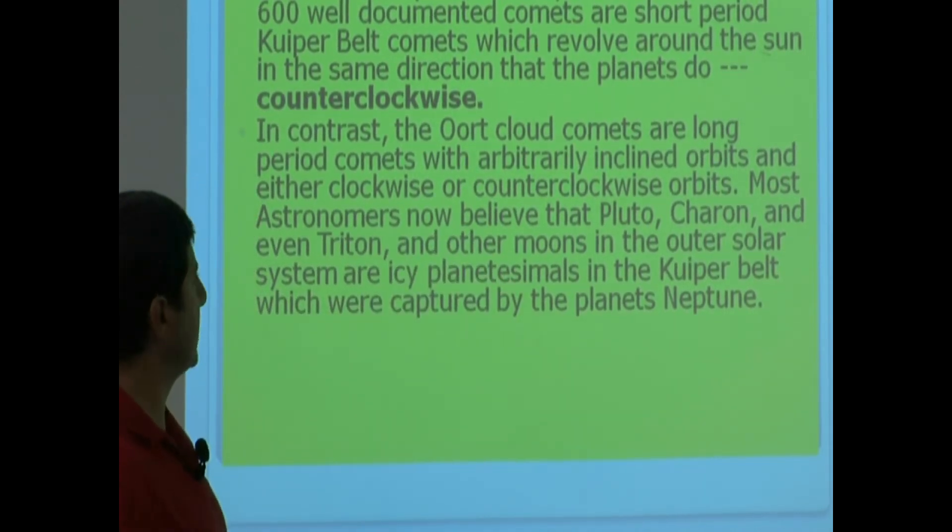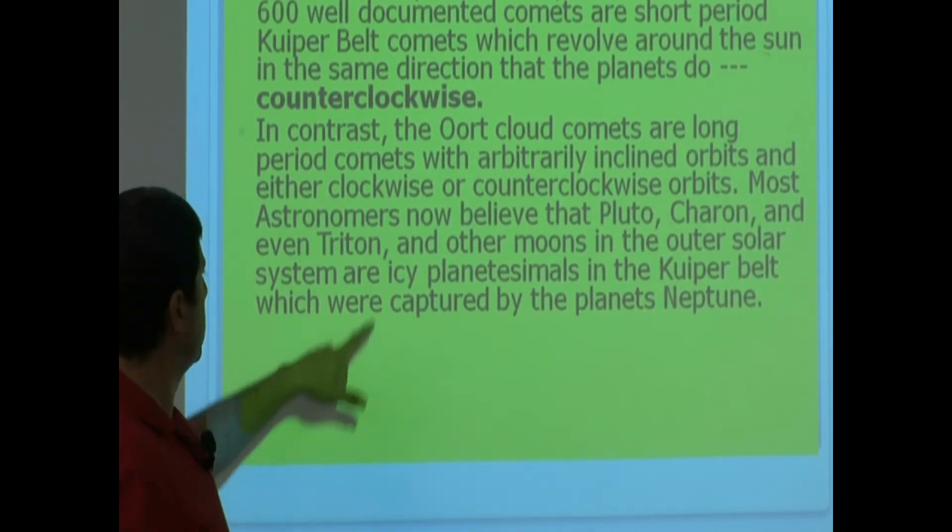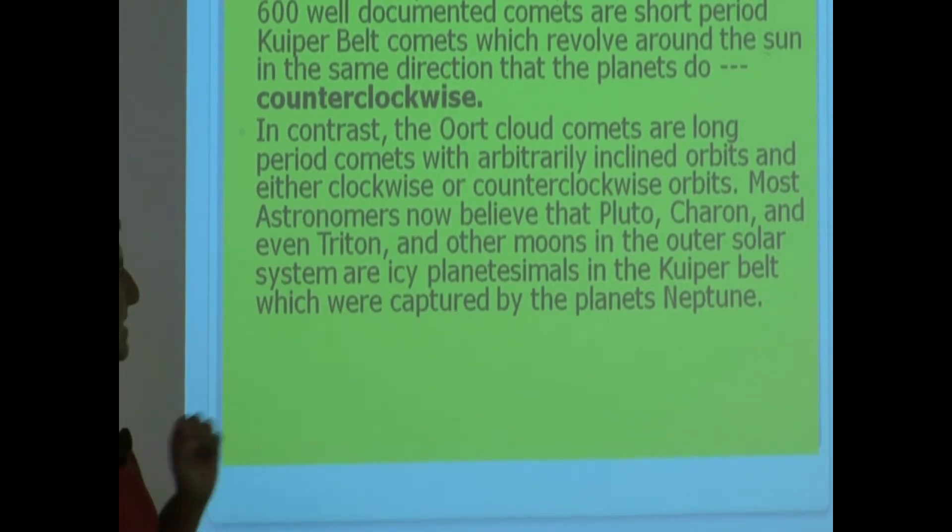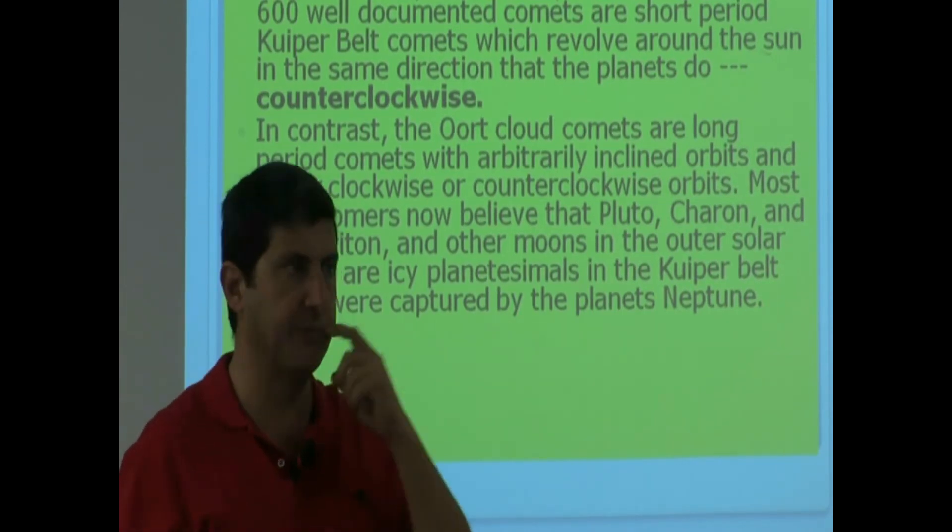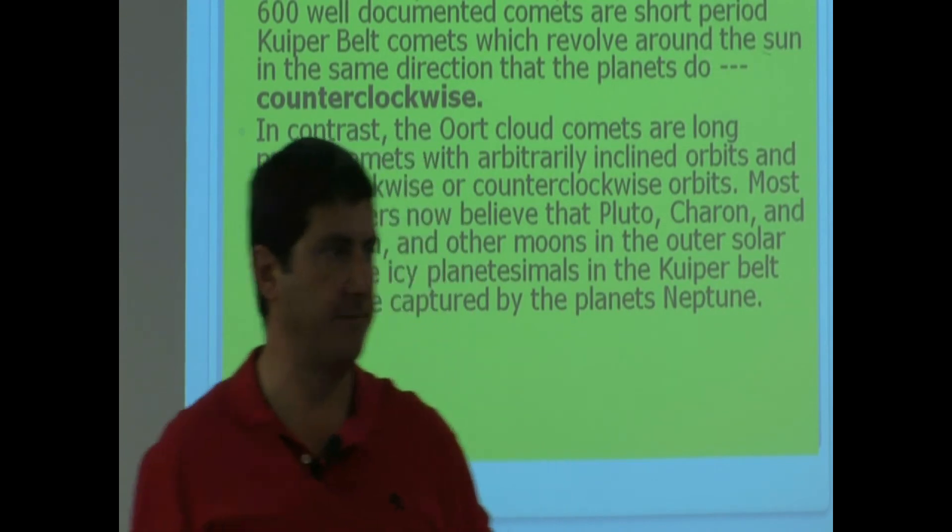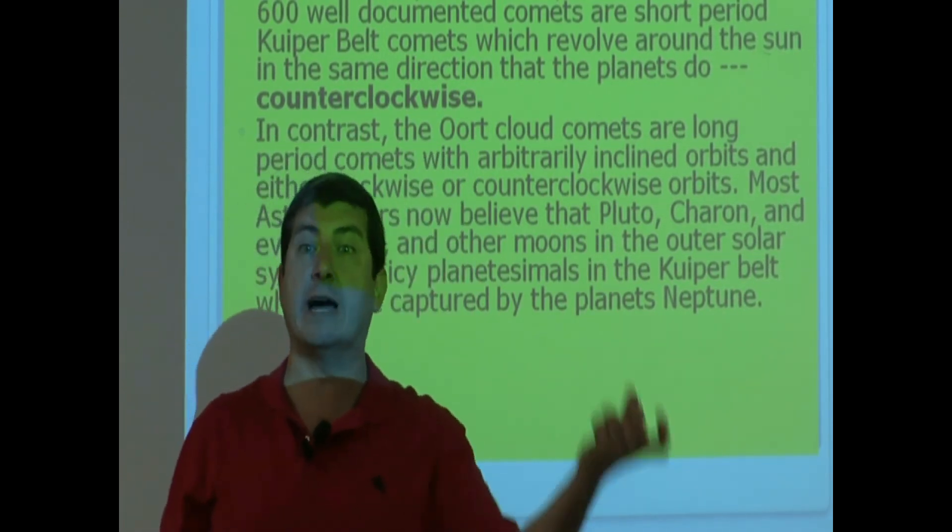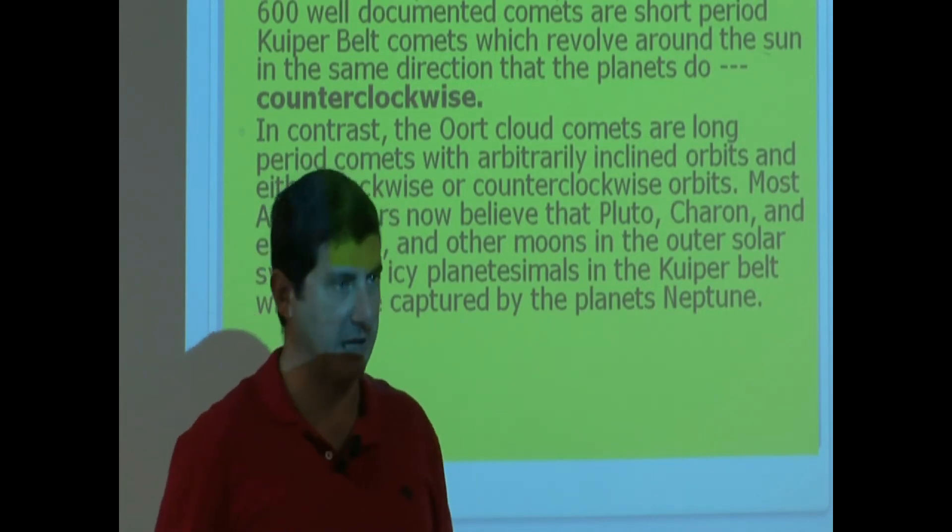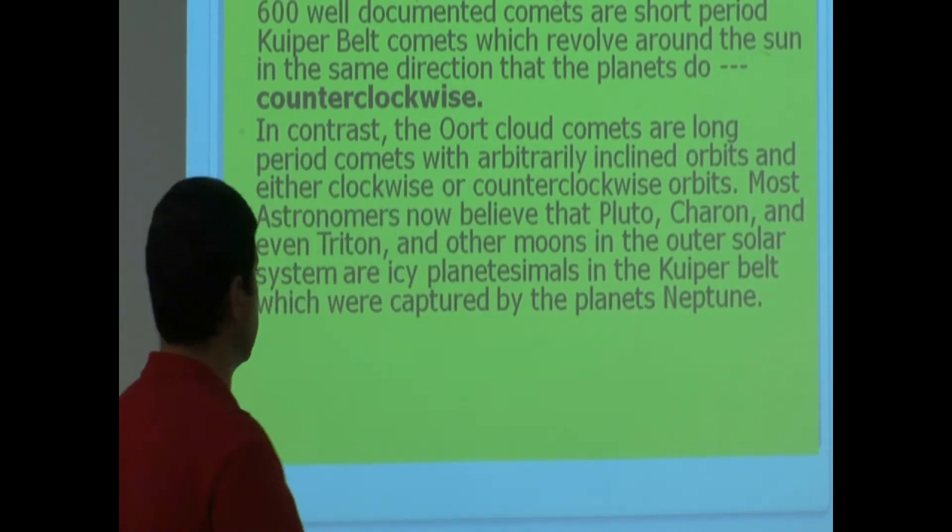Most astronomers now believe that Pluto, Charon, and even Triton, which is the largest moon of Neptune, and other moons in the outer solar system are icy planetesimals in the Kuiper Belt, which were captured by the planet Neptune. Neptune captured Triton. It probably even tried to capture Pluto, but wasn't able to. Pluto got away, and then it became its own Kuiper Belt object.